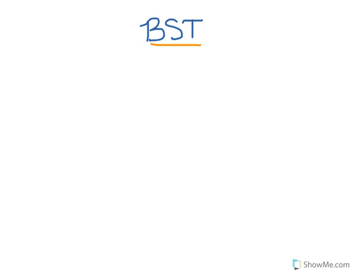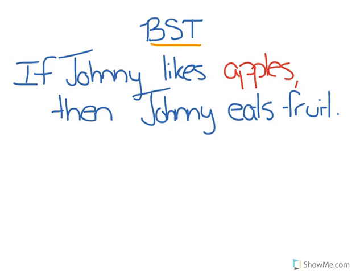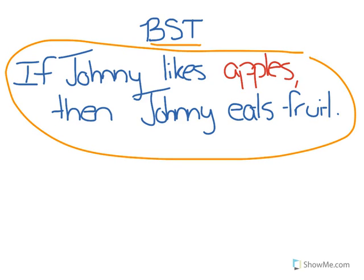For example, if I have the statement 'if Johnny likes apples, then Johnny eats fruit,' I would prove this using direct proof by first saying Johnny likes apples, this is true, and then showing how that leads to Johnny eating fruit being true also.